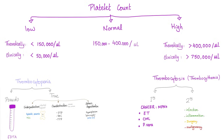Thrombocytopenia can be pseudo — if you put the sample in a purple top tube, sometimes EDTA causes clumping of the platelets, also known as microsatellites — or it could be true thrombocytopenia. True thrombocytopenia is caused by underproduction, over-destruction, or splenic sequestration. ITP is an immune over-destruction, which leads to true thrombocytopenia.